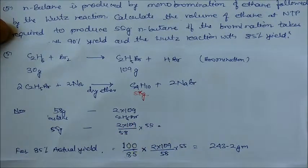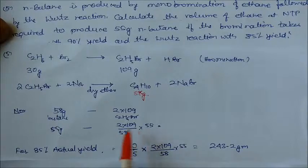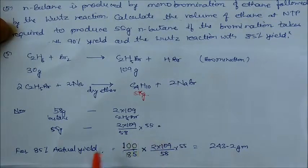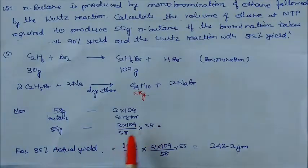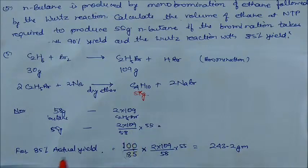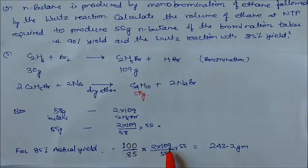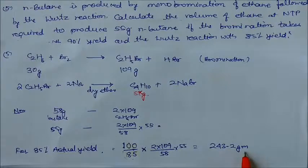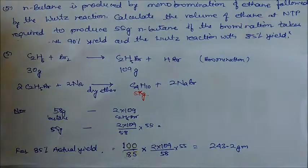The Wurtz reaction has an 85% actual yield. So accounting for this, the actual amount of ethyl bromide needed is: (100/85) × (2 × 109/58) × 55 = 243.2 grams of ethyl bromide.